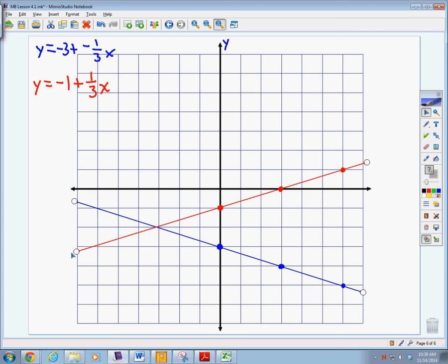All right, so now what we're looking for is we're looking for the solution that makes both equations true. So we look for where the lines intersect, and it happens to be right here at the point negative 3, negative 2.